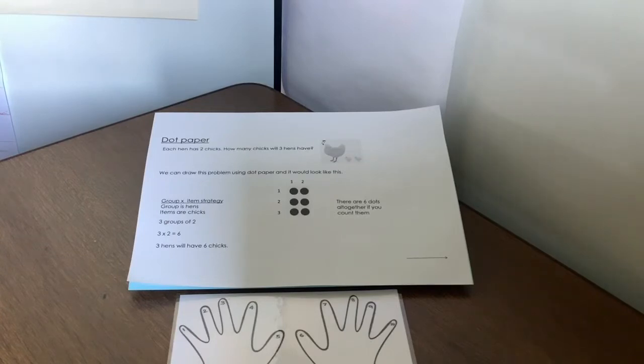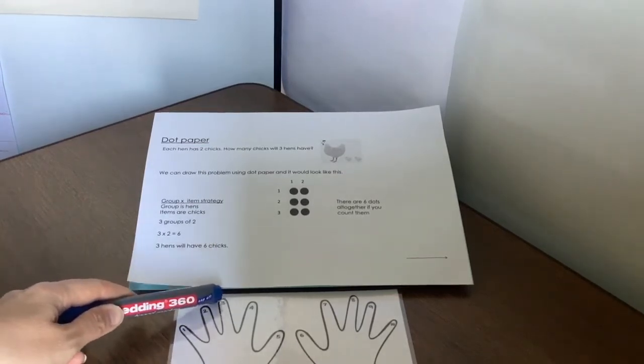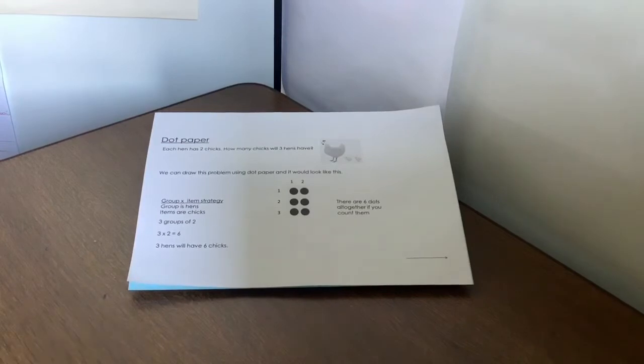Well, if we were doing this yesterday, if we were doing it skip counting, then we would have said 2, 4, 6 because 3 times 2 is 6. But we're doing it in dot paper. So let's have a look at what it looks like in the dot paper.